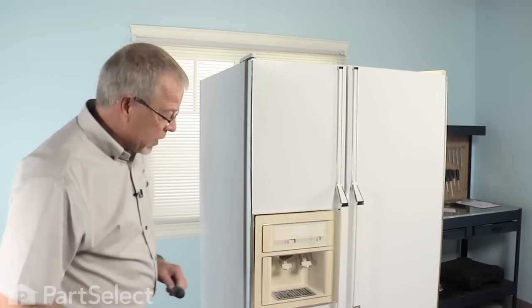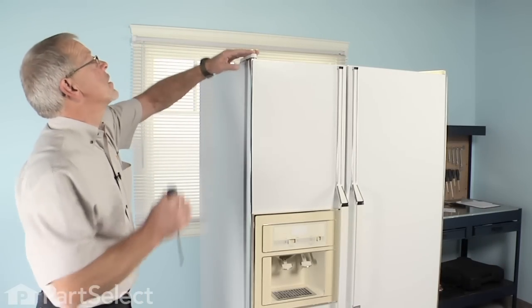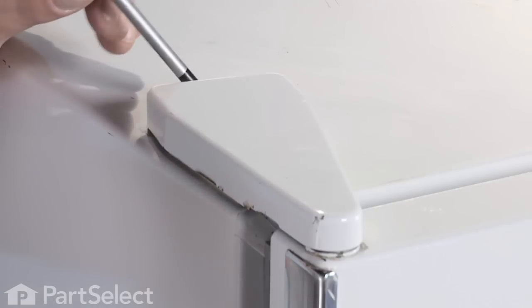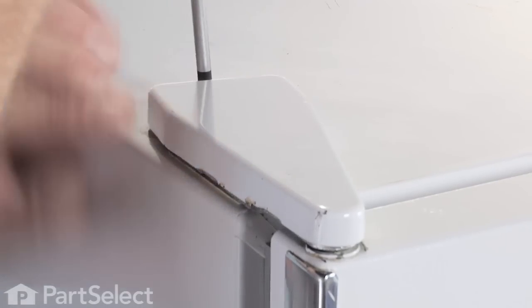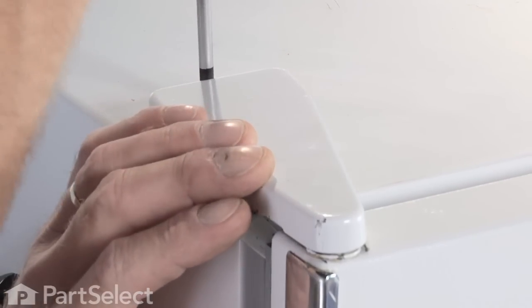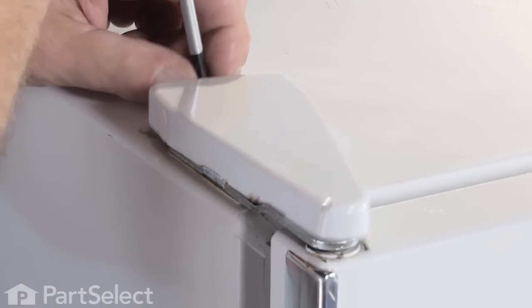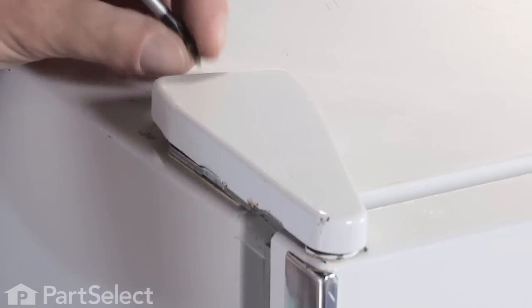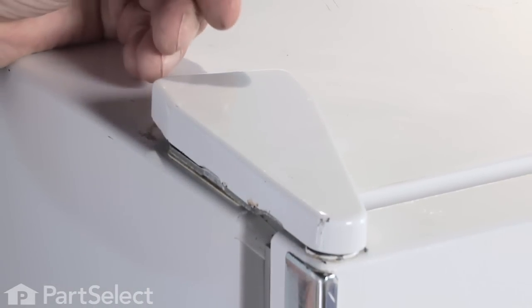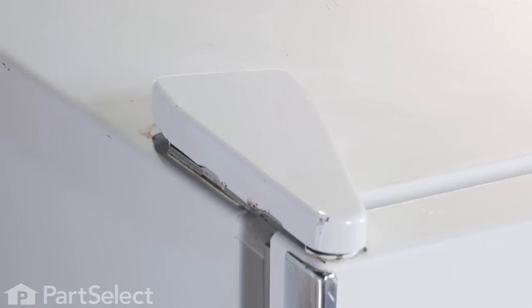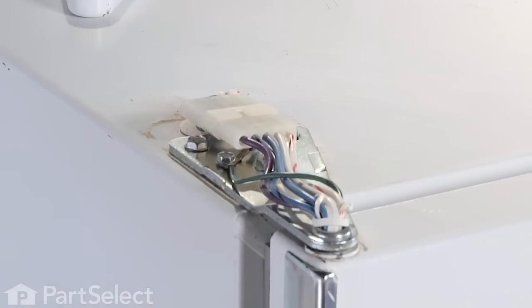Now that we've removed the water line, we're ready to take the upper hinge cover off. It's held in place with a Phillips screw. Remove the screw, lift the hinge cover off, that'll expose the wire harness.